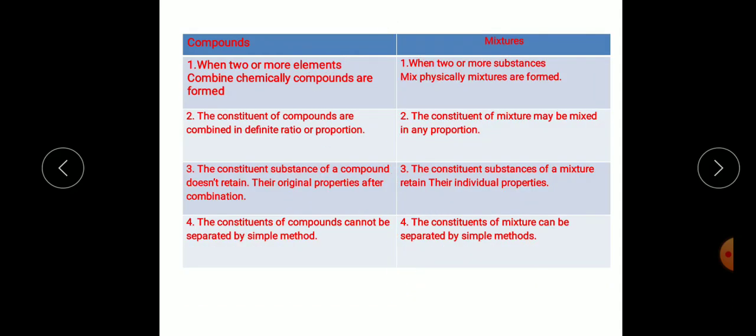Compounds and mixtures. When two or more elements combine chemically, compounds are formed. Mixtures: when two or more substances mix physically, they form a mixture. The constituents of compounds are combined in definite ratio or proportion. Mixtures: the constituents of mixture may be mixed in any proportion.